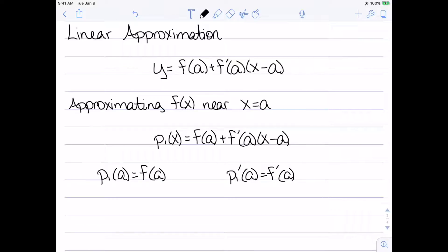In particular, p_1(a) is equal to f(a), so it matches f in the value at a. And p_1'(a) is equal to f'(a), so it also matches the slope of f. So it does actually hit f at the point x equal to a, and it has the same slope as my function.